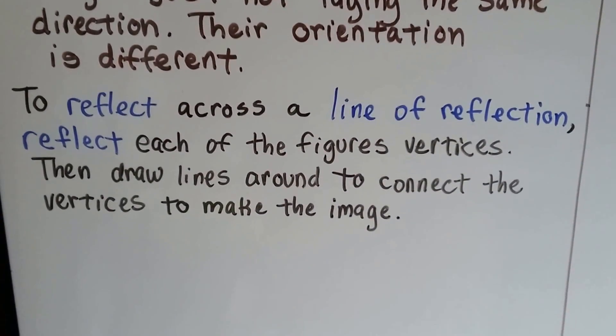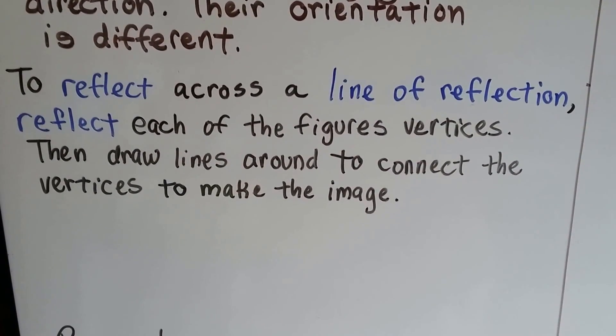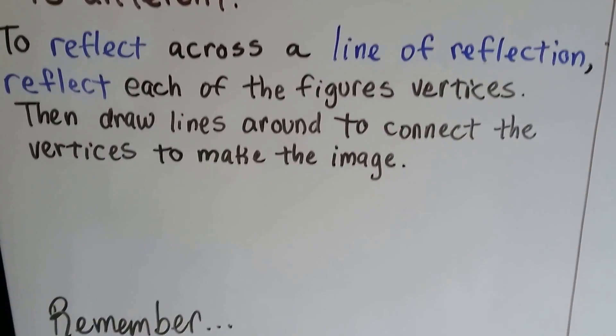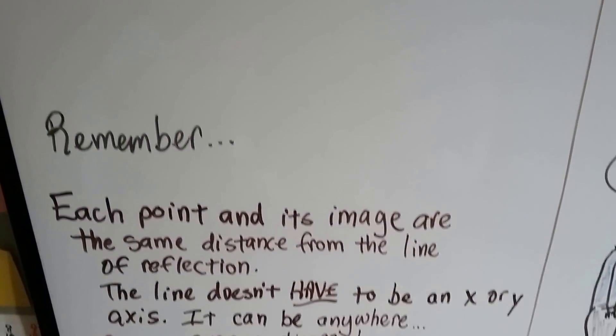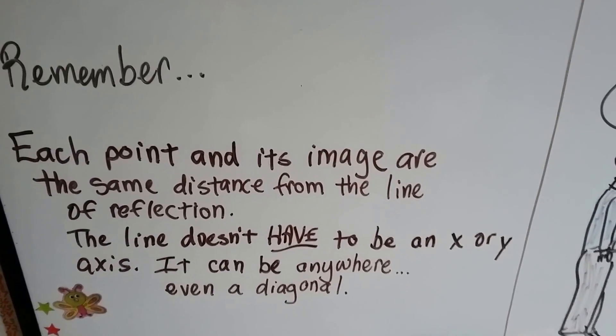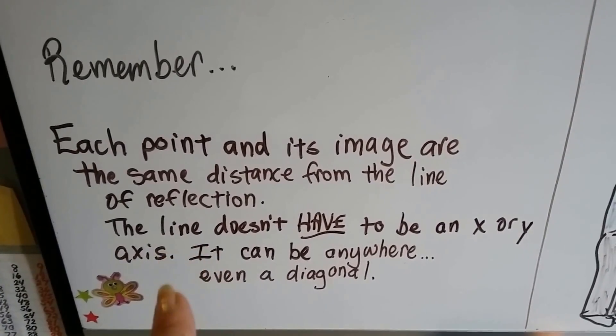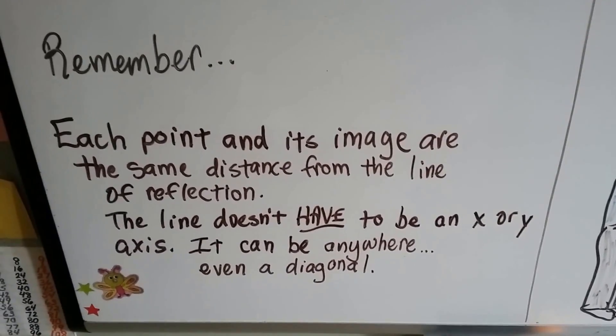To reflect across a line of reflection, we reflect each of the figure's vertices and then draw lines around to connect the vertices to make the image. Remember, each point and its image are the same distance from the line of reflection, and that line of reflection doesn't have to be an x or a y axis. It could be anywhere, it could even be a diagonal.